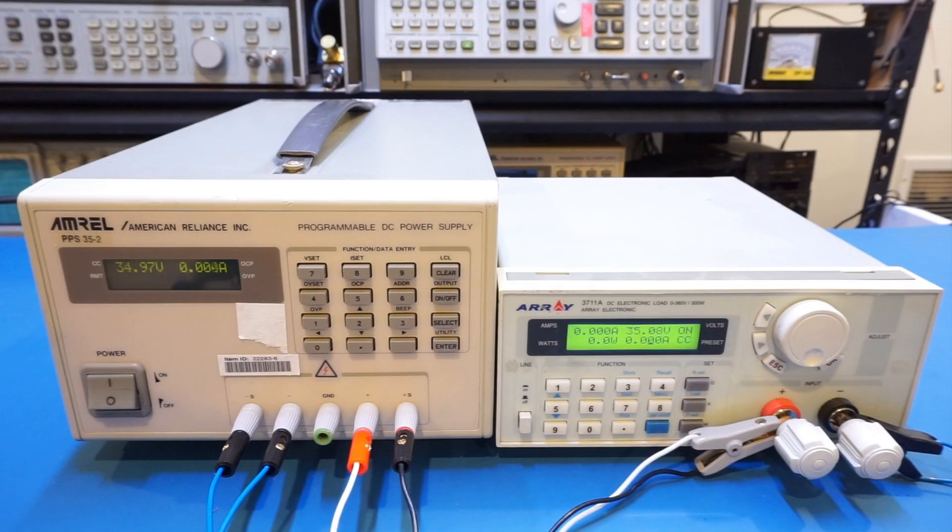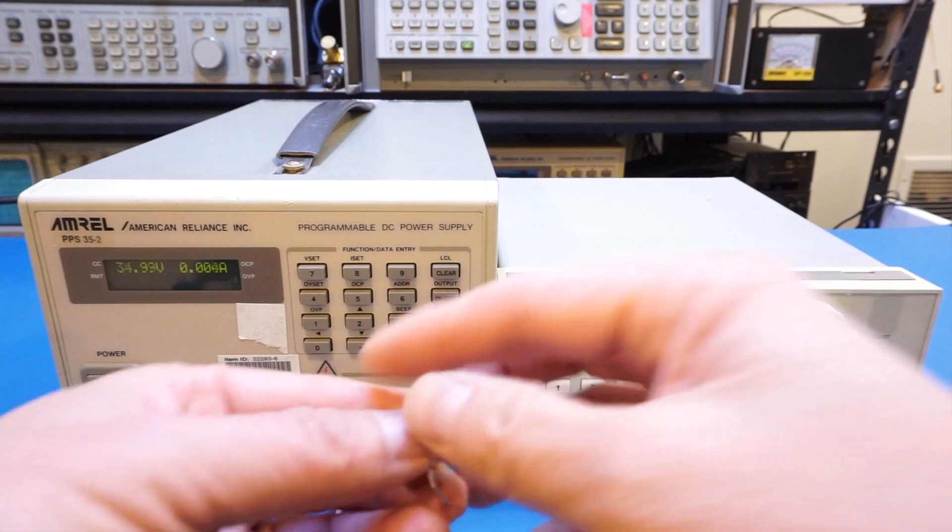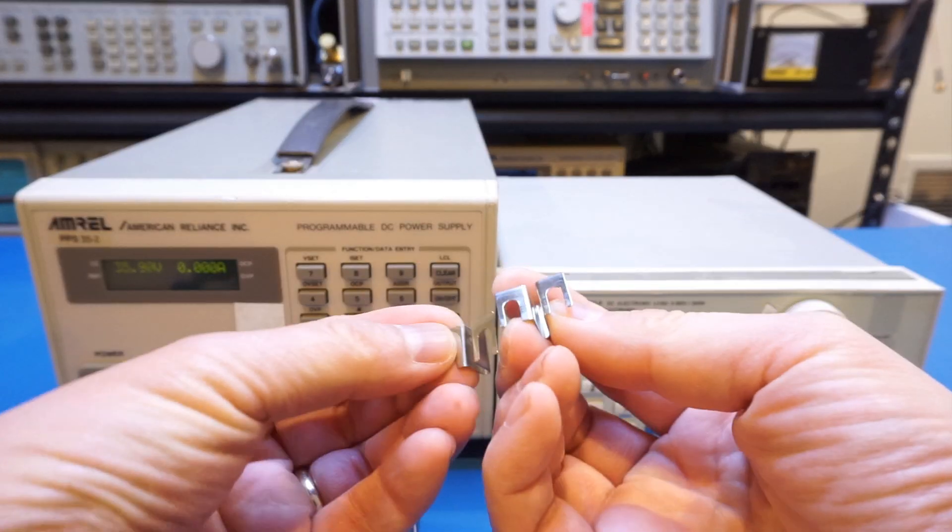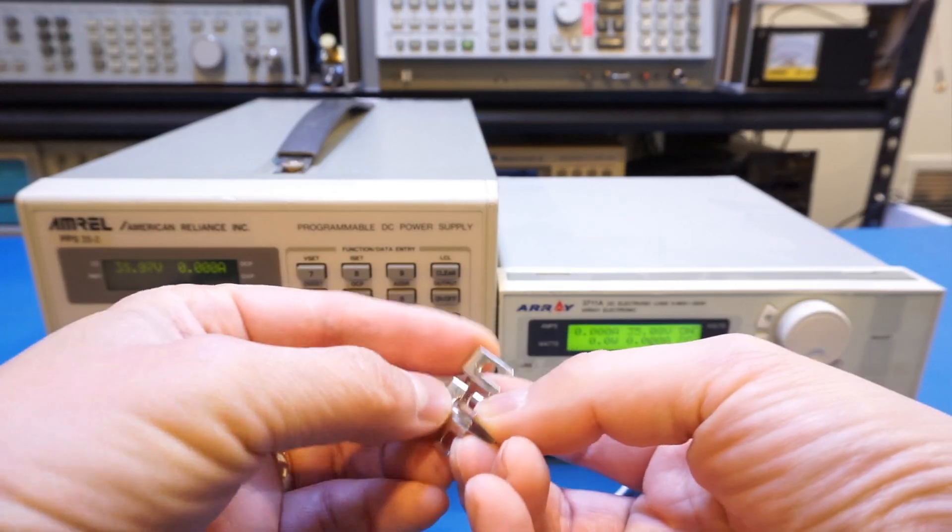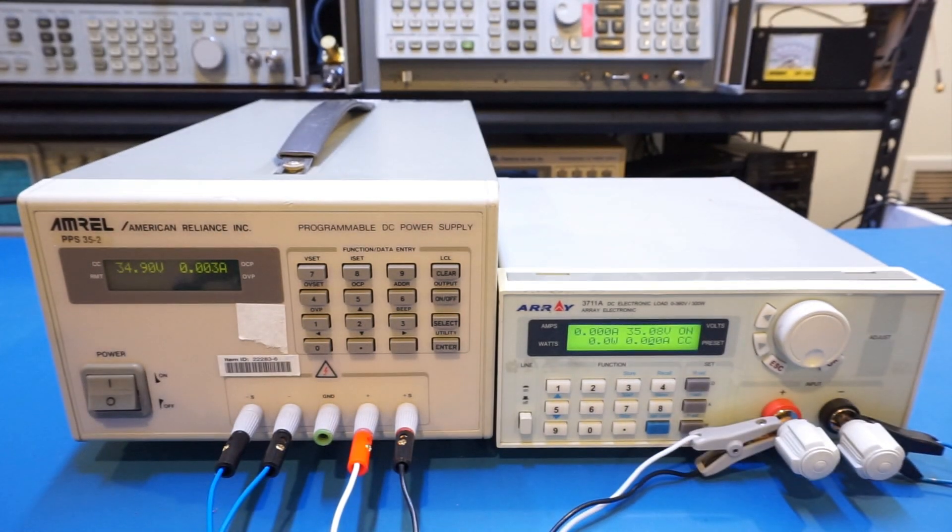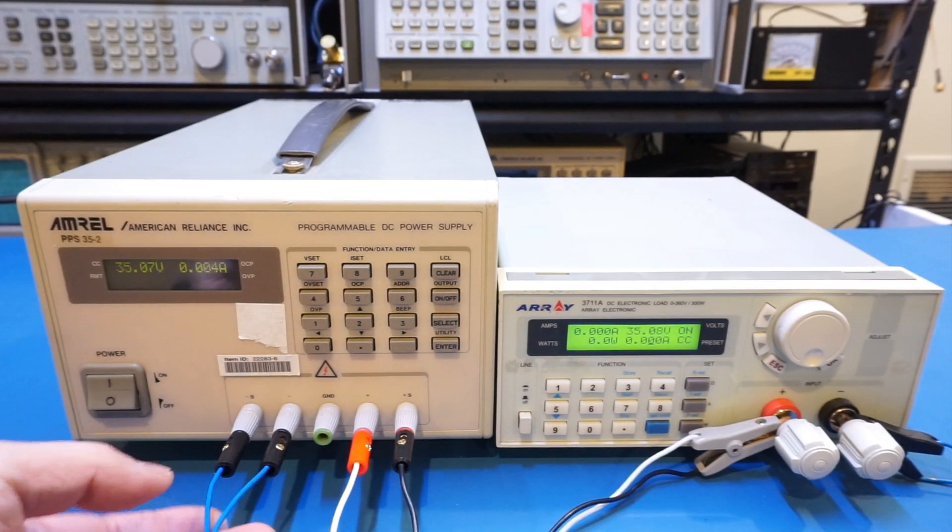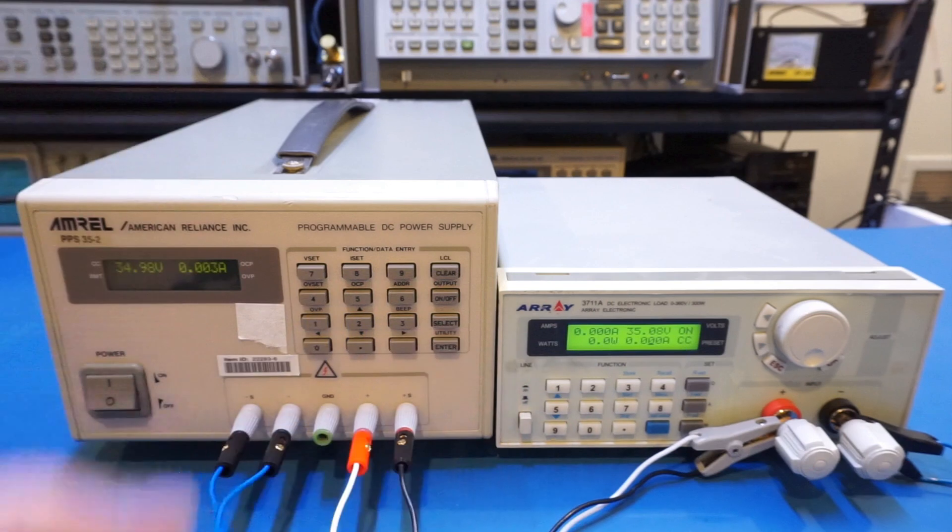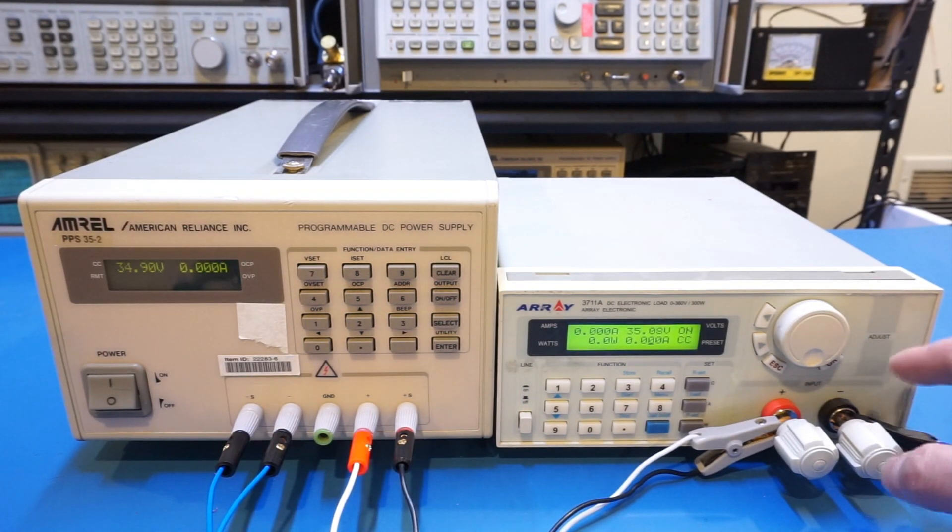Now you have seen the baseline. Let me disconnect these leads and turn off both the power supply and the load. I'm going to temporarily disable the link between the sensing terminal and power supply output at the rear end, and we will do four-terminal measurement again.